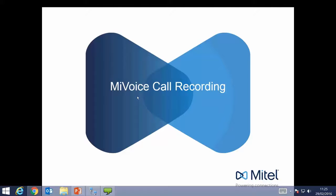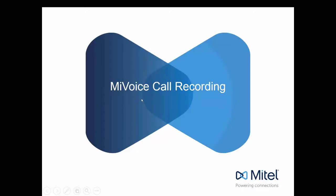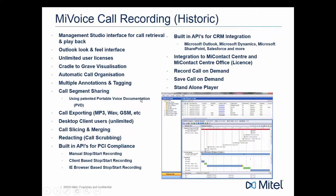This is a presentation on MyVoice call recording. The MyVoice call recorder can record ISDN lines, ISDN30, ISDN2, SIP trunks, and PSTN lines. It can record analog extensions, digital extensions, IP extensions, and SIP extensions. We can mix and match those types of connectivity on a single or multiple recorders.